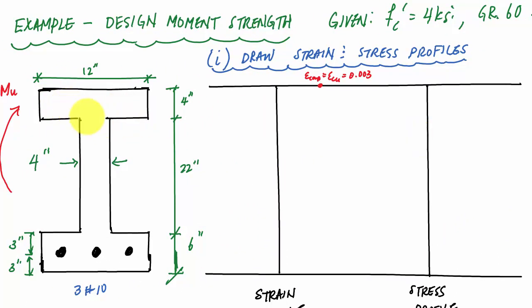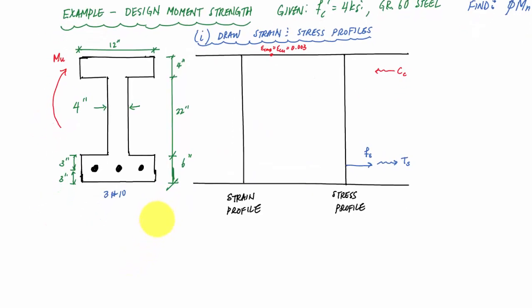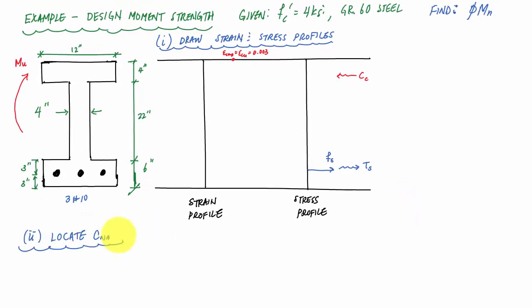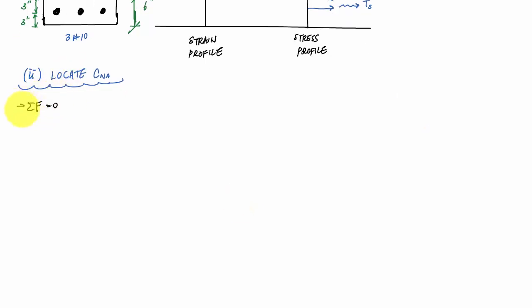If the depth of the equivalent stress block is in the flange, I have a simple rectangle for my compression zone. But if it's in the web, I have a T-shape, which affects where the force resultant is. In any case, there will be a compression force resultant due to the concrete and a tension force resultant TS from the steel. I need to locate the neutral axis first. To do that, I'll apply force equilibrium: sum of forces equals zero, so TS equals CC.